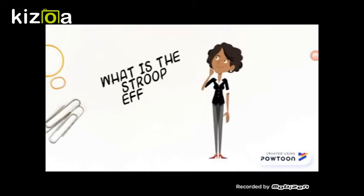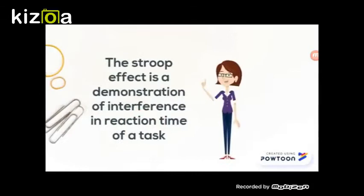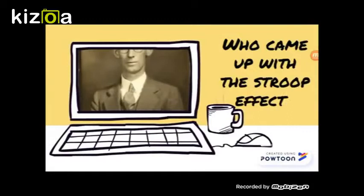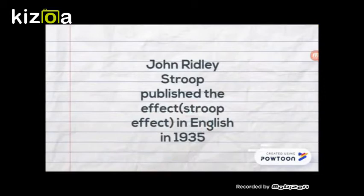What is the Stroop Effect? The Stroop Effect is a demonstration of interference in reaction time of the test. Who came up with the Stroop Effect? John Ridley Stroop published the Stroop Effect in English in 1935.